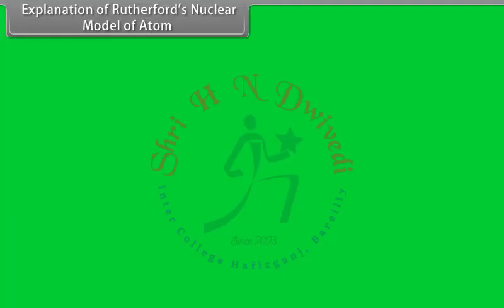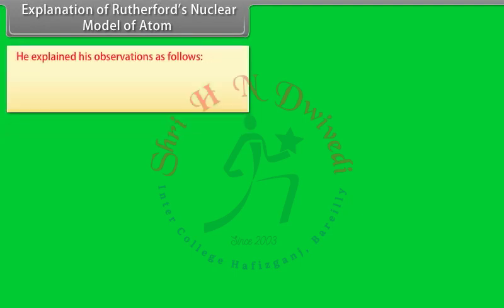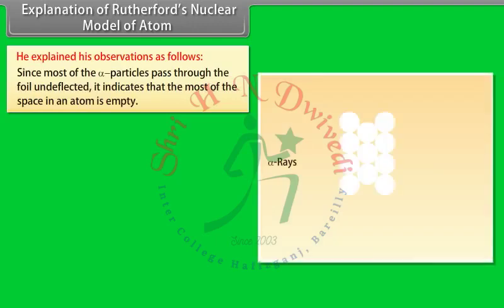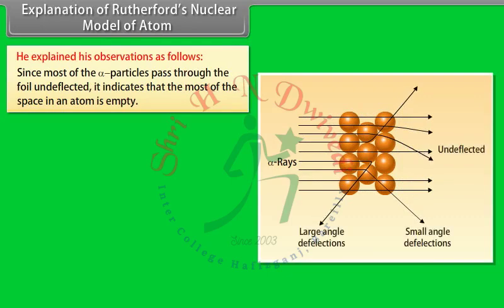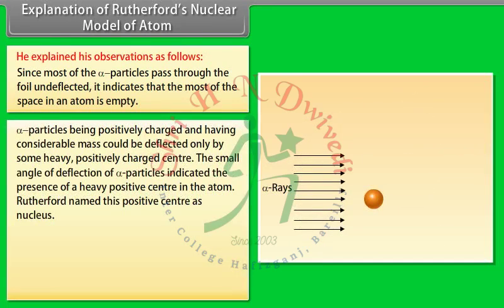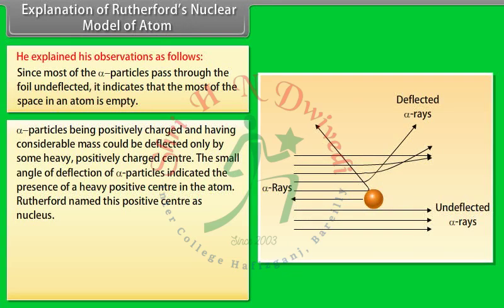Explanation of Rutherford's nuclear model: 1. Since most of the alpha particles pass through the foil undeflected, it indicates that most of the space in an atom is empty. 2. Alpha particles, being positively charged and having considerable mass, could be deflected only by some heavy positively charged center. The small angle of deflection indicated the presence of a heavy positive center in the atom, which Rutherford named the nucleus.